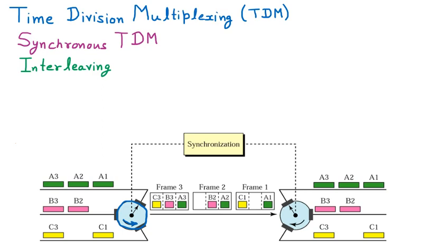On the left-hand side is the sender, and on the right-hand side we are having the receiver. There are three senders: A, B, and C. They are going to send their packets. As we already know that in time division multiplexing, everybody is given a specific time, and that time is given with the help of this particular circle, which is acting like a switch taking data from all the specific senders.